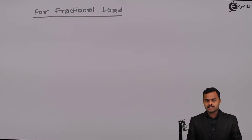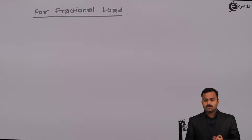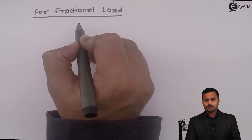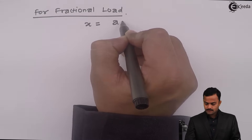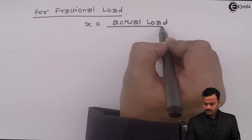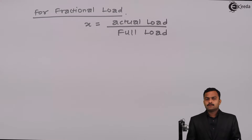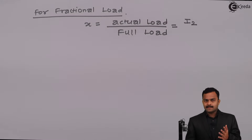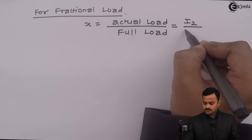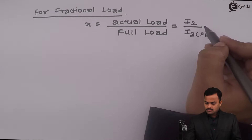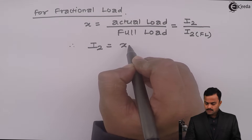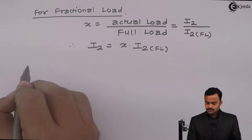That isn't always the case — sometimes we apply fractional load. For fractional load we need to define efficiency differently. Sometimes we apply half load or sixty percent of load. That fraction X is the ratio of actual load to full load, related to currents as X equals secondary current at actual load upon secondary full load current I2 FL.